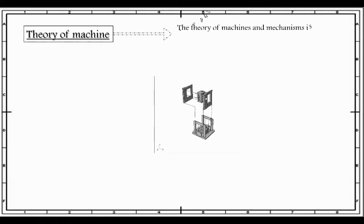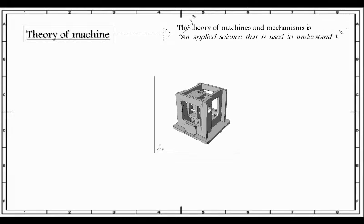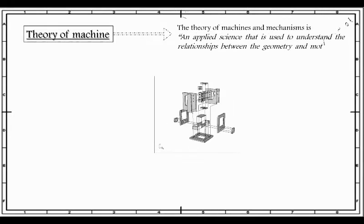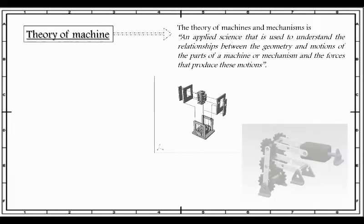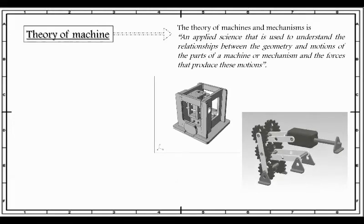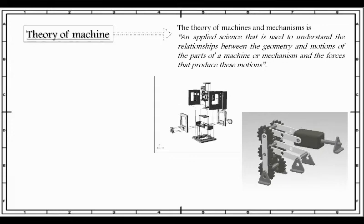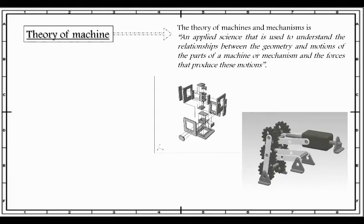The subject theory of machine may be defined as that branch of engineering science or applied science that is used to understand the relationships between the geometry and motions of the parts of a machine or mechanism and the forces that produce this motion. Some of the examples are shown below.